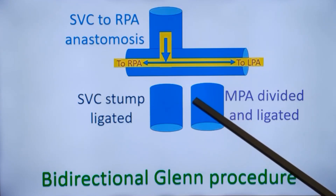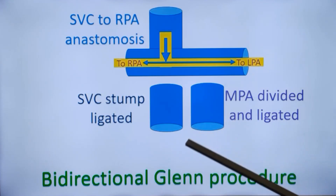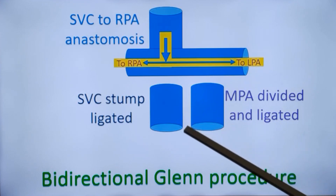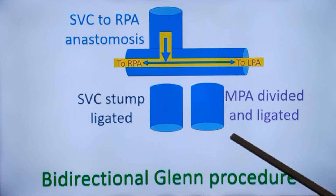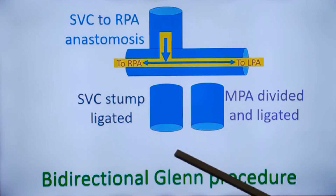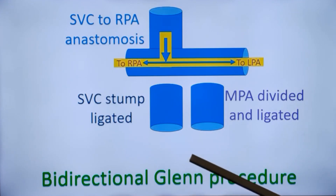Another advantage of the bidirectional Glenn procedure is that it is useful in corrective surgery. At the time of corrective surgery, the procedure is simplified in a Fontan-type repair if a bidirectional Glenn was done as the initial palliative procedure.